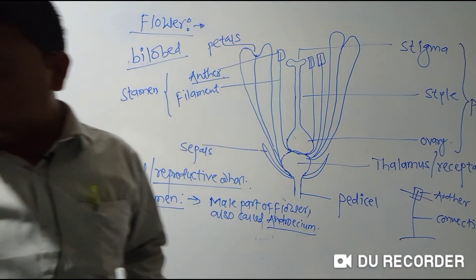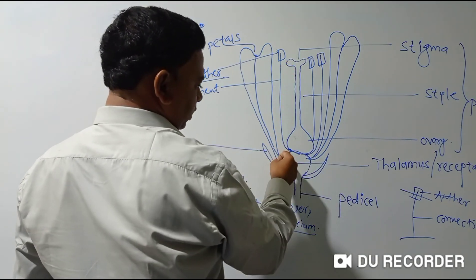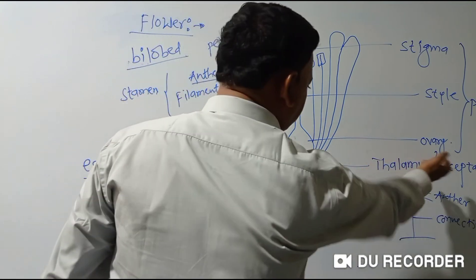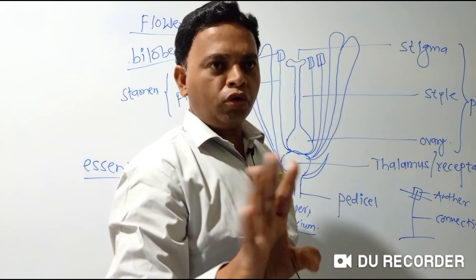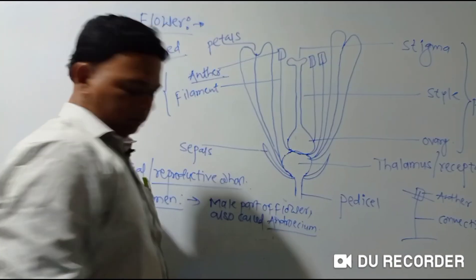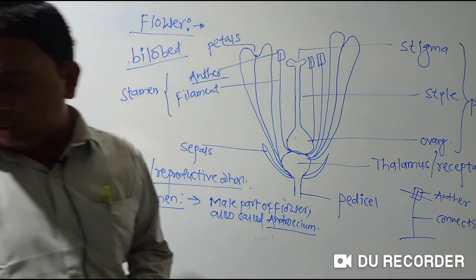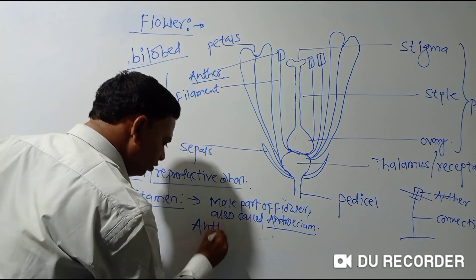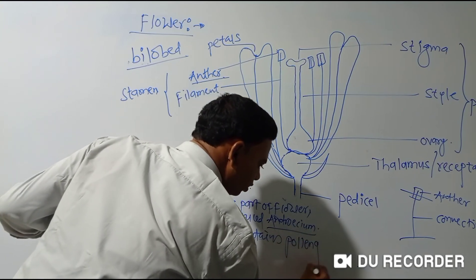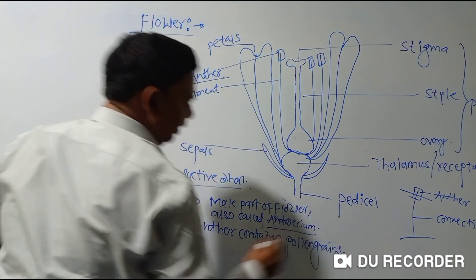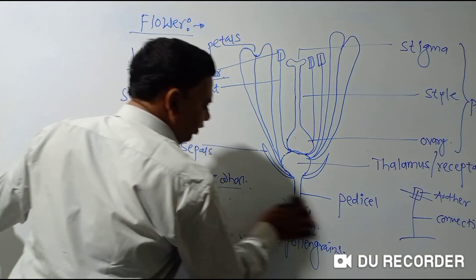One more point: these sepals and petals collectively are known as the non-essential whorl or accessory whorl of the flower. Why are they called non-essential? Because sepals and petals do not directly take part in reproduction — specifically in sexual reproduction or pollination. They are indirectly involved, that is why they are called the accessory or non-essential or non-reproductive whorl.